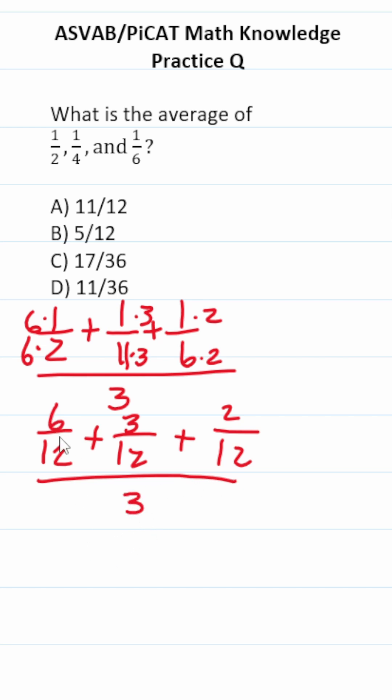Again, this is all divided by three. Let's add these fractions. Three plus six is nine, plus two is eleven. This is eleven over twelve divided by three.